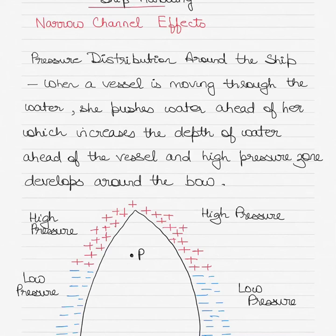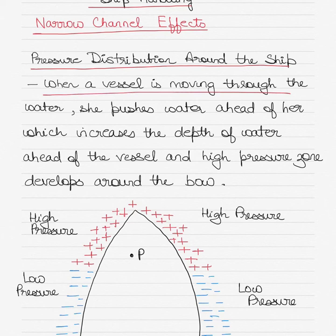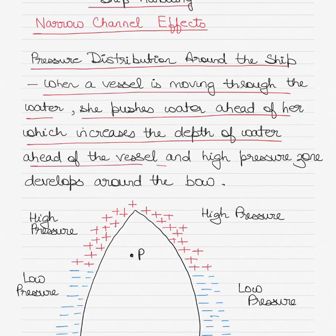Today in the topic of ship handling, we'll talk about the effects of the narrow channel on a ship's passage. Before we start with that, let's talk about the pressure distribution around the vessel. When a vessel is moving through the water, she pushes water ahead of her, which increases the depth of water ahead of the vessel and a high pressure zone develops around the bow.